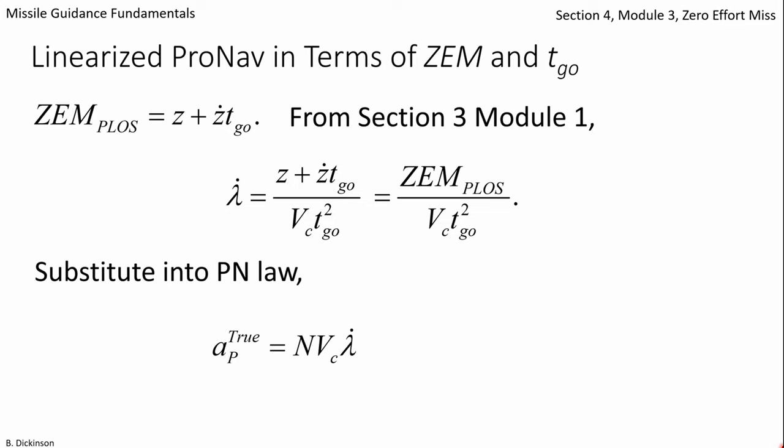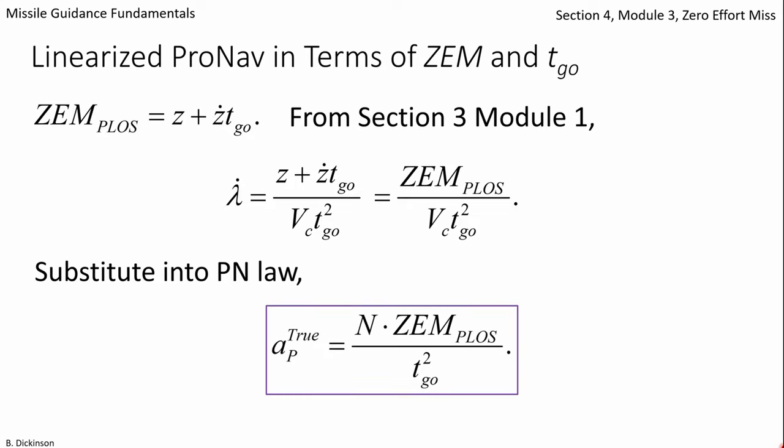We have true pronav as a function of zero effort miss perpendicular to the line of sight and time to go.